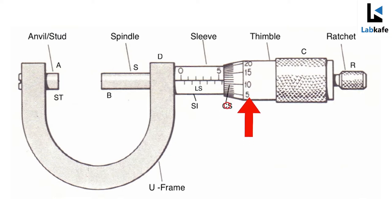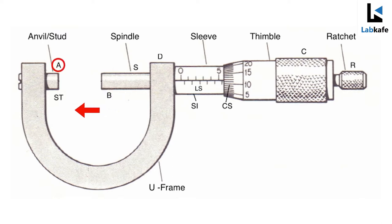There are 50 or 100 divisions on the circular scale. When the end of the spindle or screw B touches the surface A of the stud or anvil ST, the zero mark on the linear scale and the circular scale should coincide with each other. The linear scale is also called pitch scale or main scale.